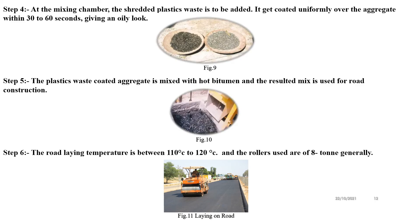At the mixing chamber, the shredded plastic waste is added. It gets coated uniformly over the aggregate within 30 to 60 seconds, giving it an oily look as you can see in the image on the left-hand side. The waste plastic-coated aggregate is then mixed with hot bitumen, and the resulting mix is used for road construction. The road laying temperature is between 110 degrees Celsius and 120 degrees Celsius, and rollers of 8 tonnes are generally used.